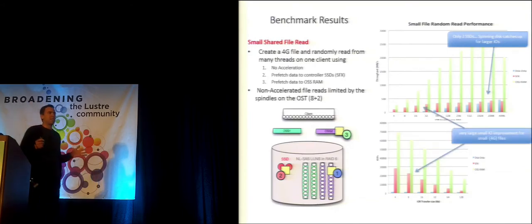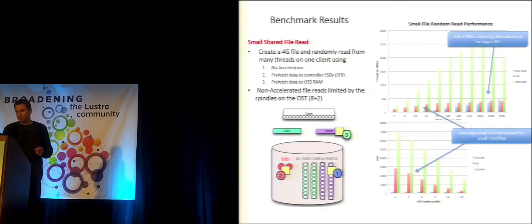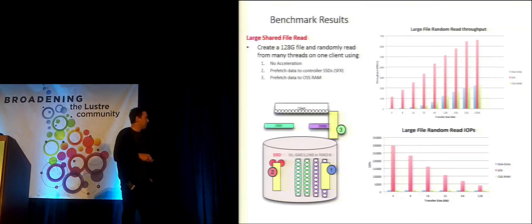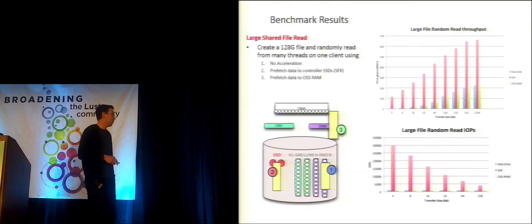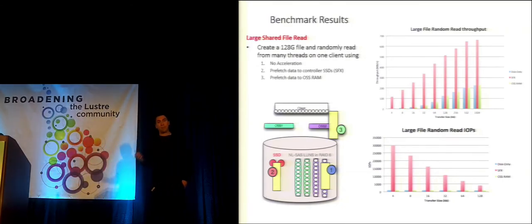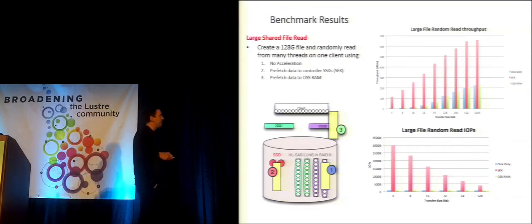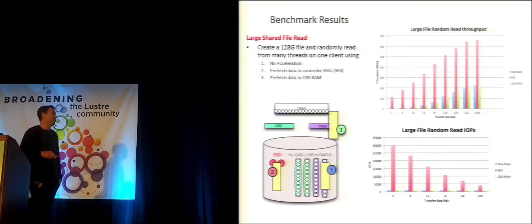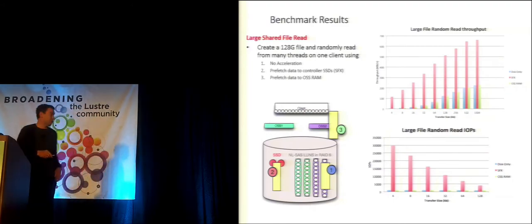That's a particular case because the file fits in OSS RAM. So we tried another test with a very large file — a 128 GB file — but we only have 32 GB on the OSSs. The large file is denoted by the larger yellow rectangle. It can't fit into RAM, and that's reflected in the graphs: the green RAM lines just mirror the disk performance because it's constantly page-faulting. But we still get benefits from the two SSDs, particularly for small I/Os.